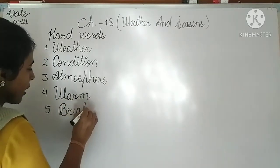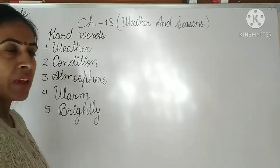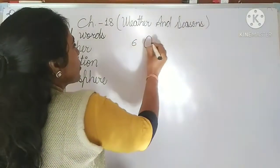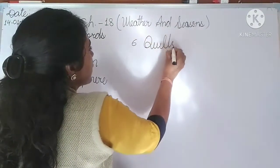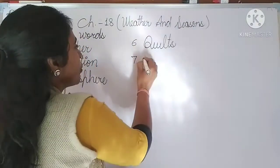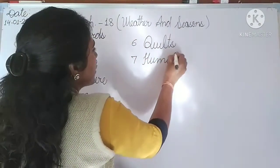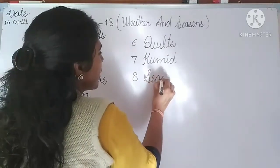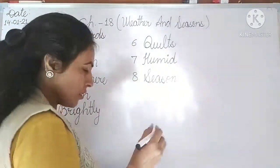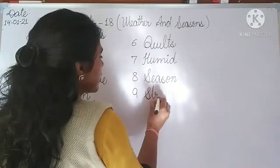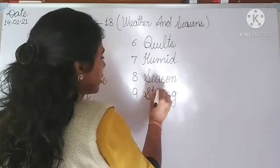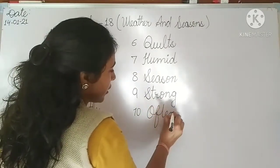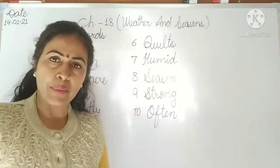Number four: 'warm' — W-A-R-M, warm. Number five: 'brightly' — B-R-I-G-H-T-L-Y, brightly. Number six: 'quilts' — Q-U-I-L-T-S, quilts. Number seven: 'humid' — H-U-M-I-D, humid. Number eight: 'season' — S-E-A-S-O-N, season. Number nine: 'strong' — S-T-R-O-N-G, strong. Number ten: 'often' — O-F-T-E-N, often. These are the hard words of this chapter.